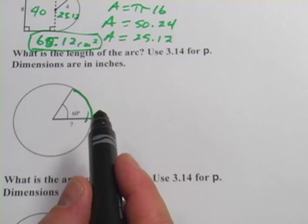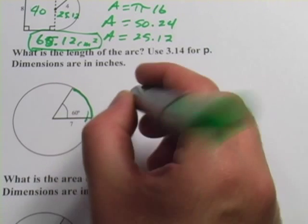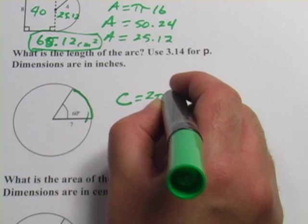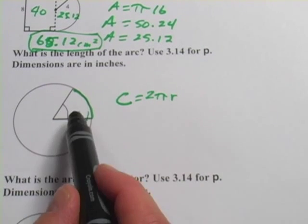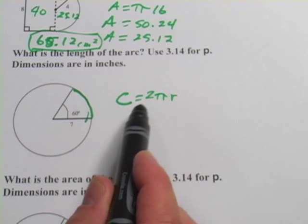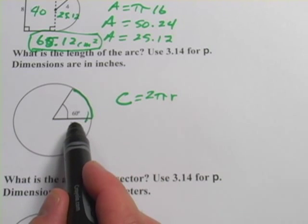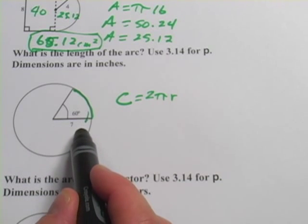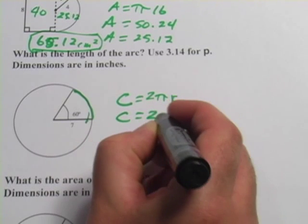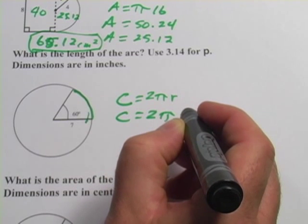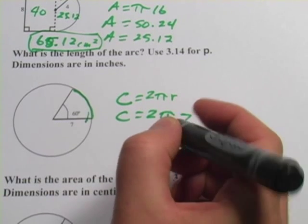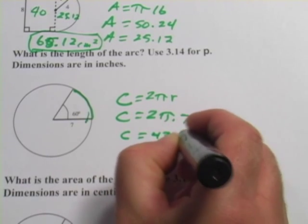And you know the formula for the circumference of a circle, or if you don't you can look it up. Circumference equals 2 pi r. So the question then is what fraction is this length here? Let's first figure out the circumference of this whole circle. It's got a radius of 7. So 2 pi 7, so that would be 14 times 3.14, and that looks like 43.96.